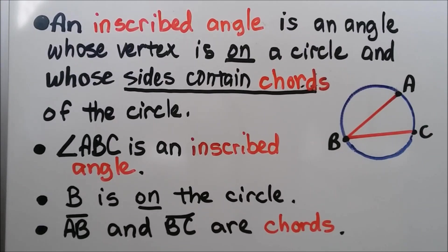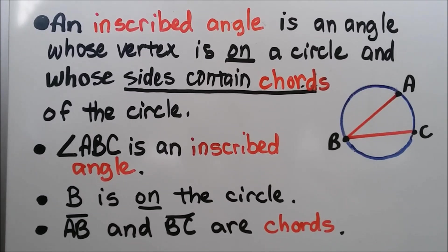An inscribed angle is an angle whose vertex is on a circle and whose sides contain chords of the circle. So angle ABC is an inscribed angle. B is on the circle — that's the vertex — and segment AB and segment BC are chords.